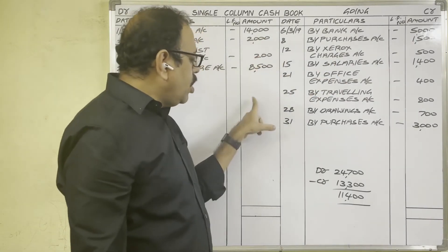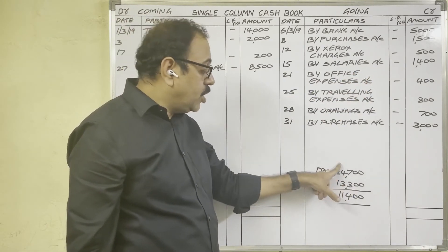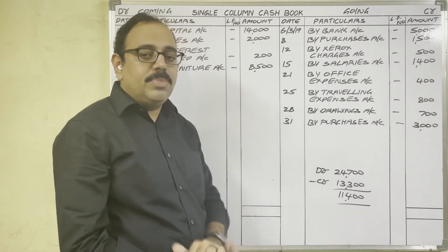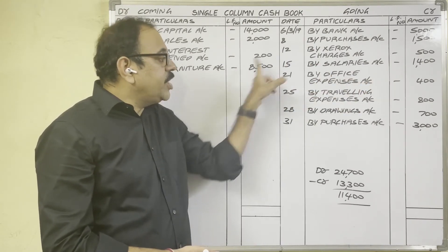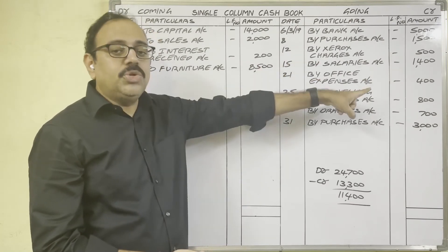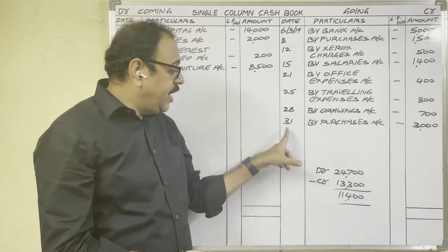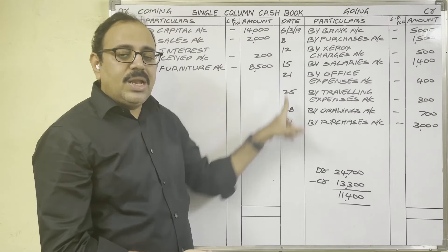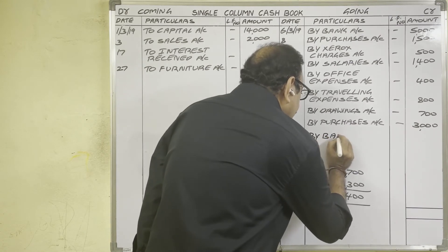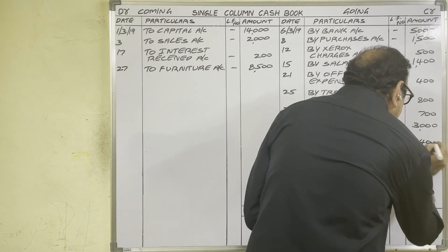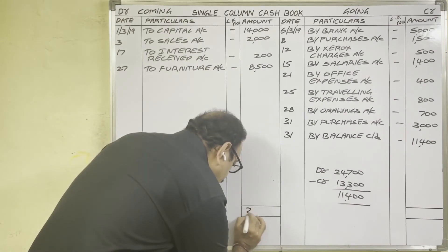All transactions have been posted in the cash book. Now for balancing, find the totals of both columns. Debit column total is 24,700 rupees and credit column total is 13,300 rupees. Debit total should be more than credit total because debit side shows receipts and credit side shows payments — we can only pay from what we receive. The difference is 11,400 rupees. Write on the credit side: 31st March, By Balance Carried Down, 11,400 rupees. Put the highest total — 24,700 rupees — on both sides.